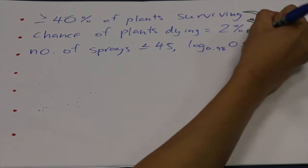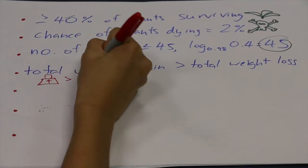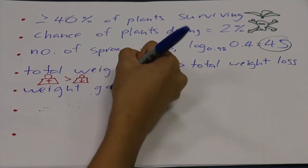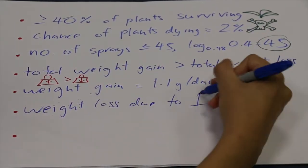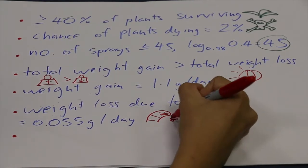Since we want a net gain of weight, the total weight gain must be higher than the total weight lost. Assuming that the total weight gain in one plant in one day is 1.1 grams, and assuming that the weight loss due to one worm in one day is 0.055 grams.